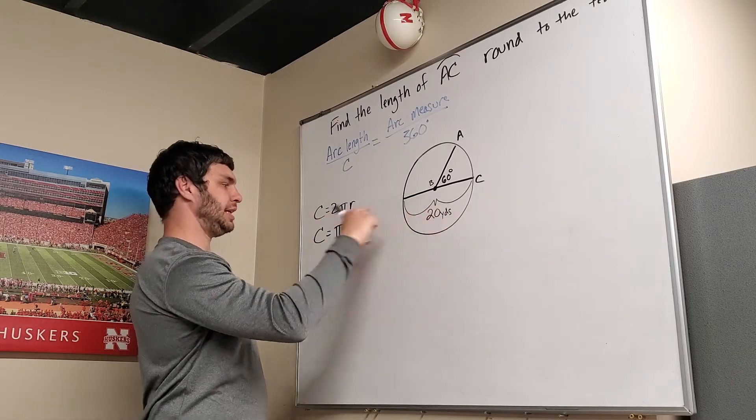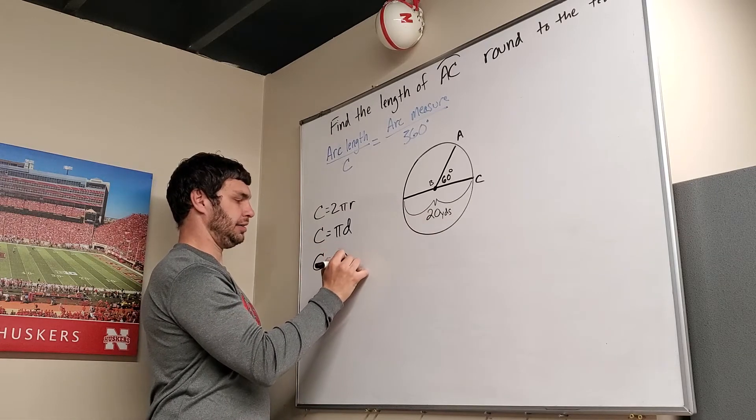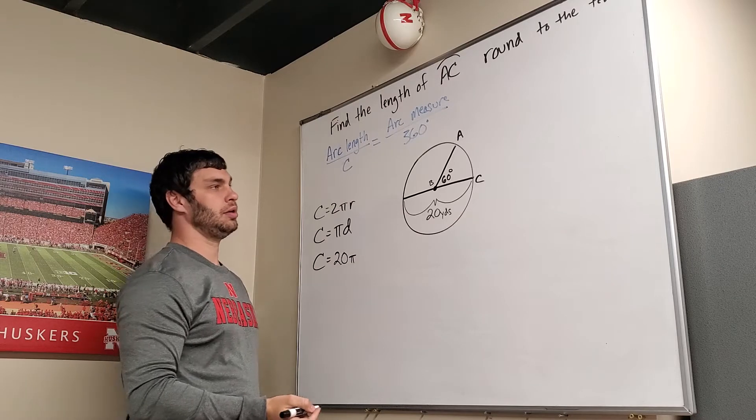So if I do 20 times pi, c equals 20 pi. We're going to use that in our equation.